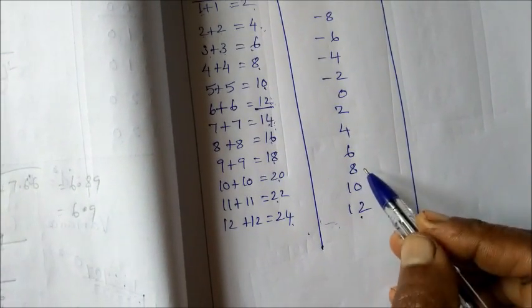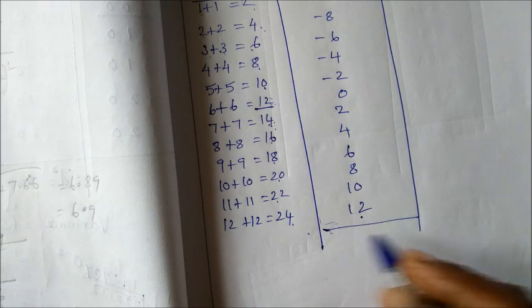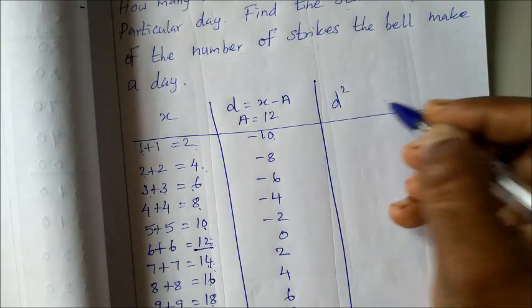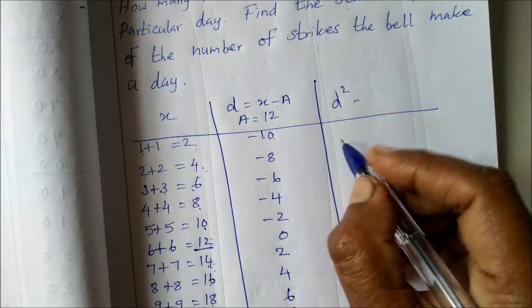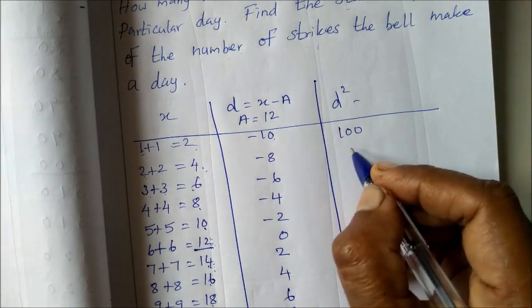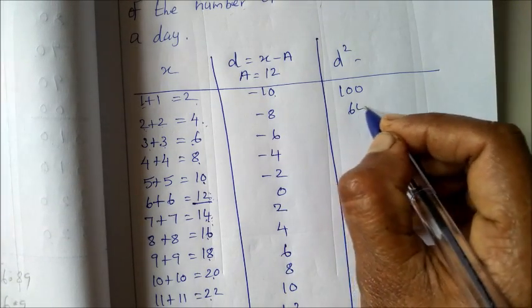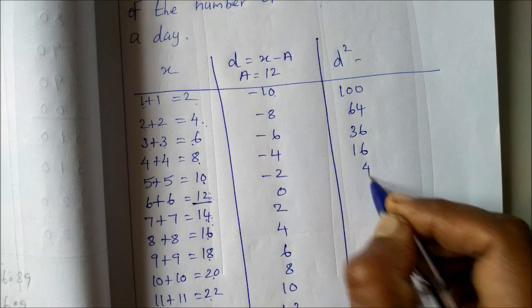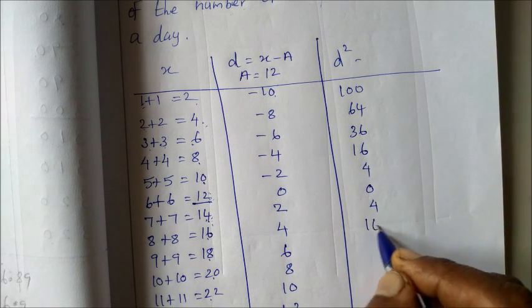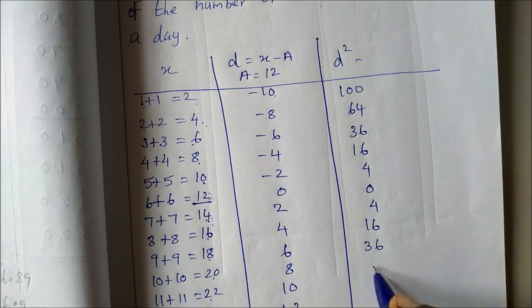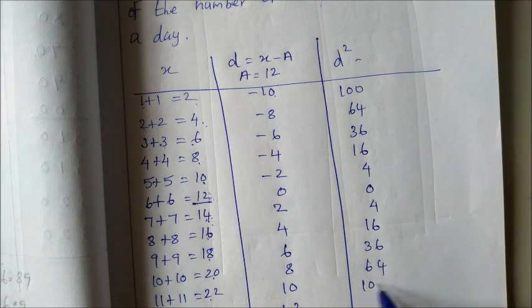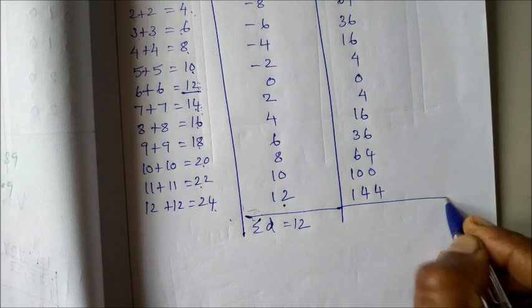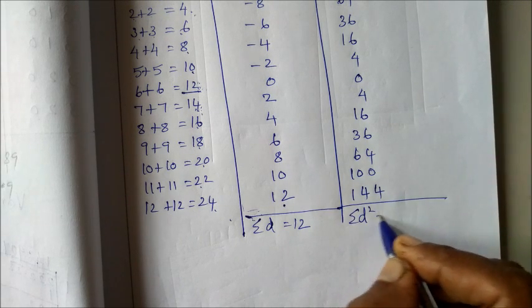The negative values and positive values cancel out. Summation of d is 0. Now find d square. The values are: 100, 64, 36, 16, 4, 0, 4, 16, 36, 64, 100, and 144. Summation of d square is 584.